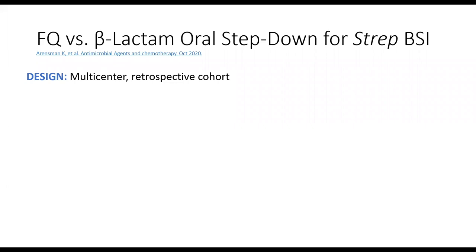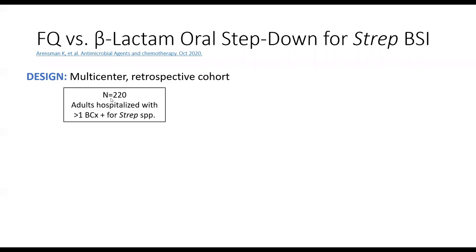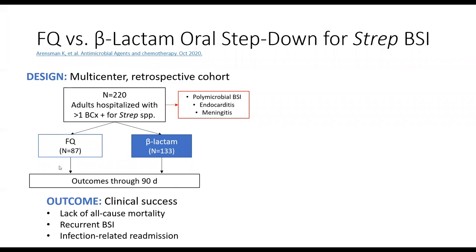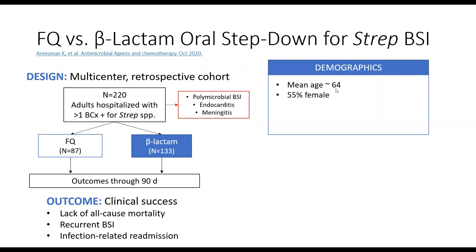There was a multi-center retrospective cohort this year that looked at about 220 patients hospitalized for strep bacteremia. They excluded more complicated infections such as endocarditis, meningitis, or polymicrobial bloodstream infections. They separated these patients into those who received fluoroquinolones and those who received beta-lactams and looked at outcomes through 90 days. The primary outcome was clinical success—a composite of lack of all-cause mortality, lack of recurrent bloodstream infections, and lack of infection-related readmissions. On average, patients were about 64, evenly split between males and females. Patients received about five to six days of IV antibiotics before transitioning to oral, and received a total of 14 days of antibiotics.